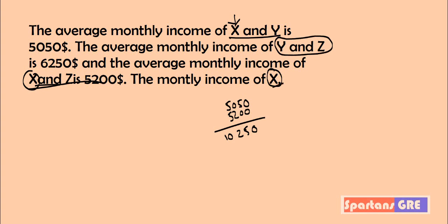Now subtract the value whichever does not have X. Because they are asking for X, you subtract the value not having X — so 6250. That gives 5050 plus 5200 minus 6250, which equals 4000. So 4000 will be the right answer.